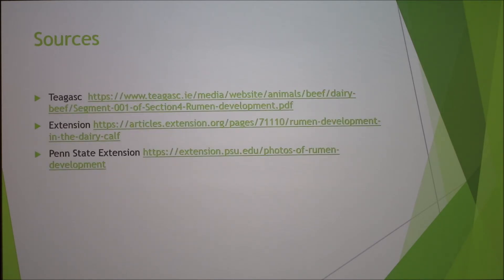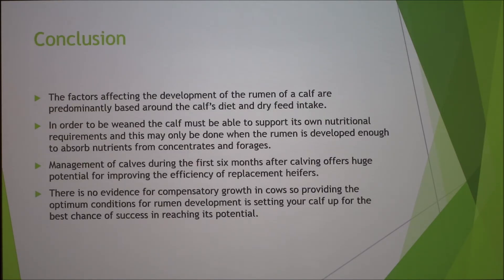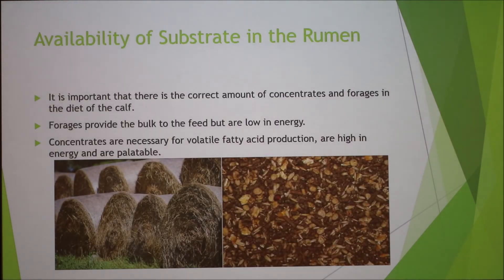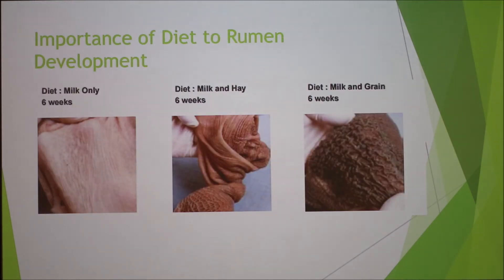The instructor asked to return to the last slide, noting the point about no evidence of compensatory growth in cows — even if a calf has a poor start at 6 weeks, it's very hard to come back. The presenter reinforced that if you don't reach the development target within that short window, the calf won't be able to develop the rumen structure properly.